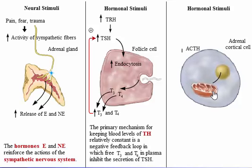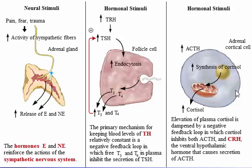Increased amounts of adrenocorticotropic hormone act on cells of the inner adrenal cortex to cause cholesterol to enter a mitochondria and synthesis of cortisol to increase. Cortisol diffuses into the bloodstream. Elevation of plasma cortisol is dampened by a negative feedback loop in which cortisol inhibits both adrenocorticotropic hormone and corticotropin-releasing hormone — the ventral hypothalamic hormone that causes secretion of adrenocorticotropic hormone.